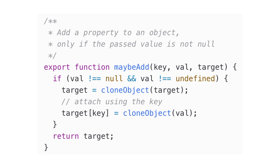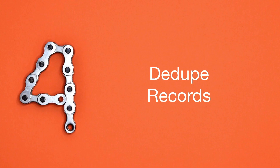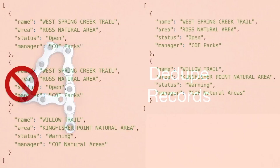This is where the concept of transducers comes in — a conceptual framework for doing this. Basically it's a functional concept that allows you to write composable reducers. If you're familiar with Clojure, this is a very common idea. There are ways to do it in JavaScript as well.